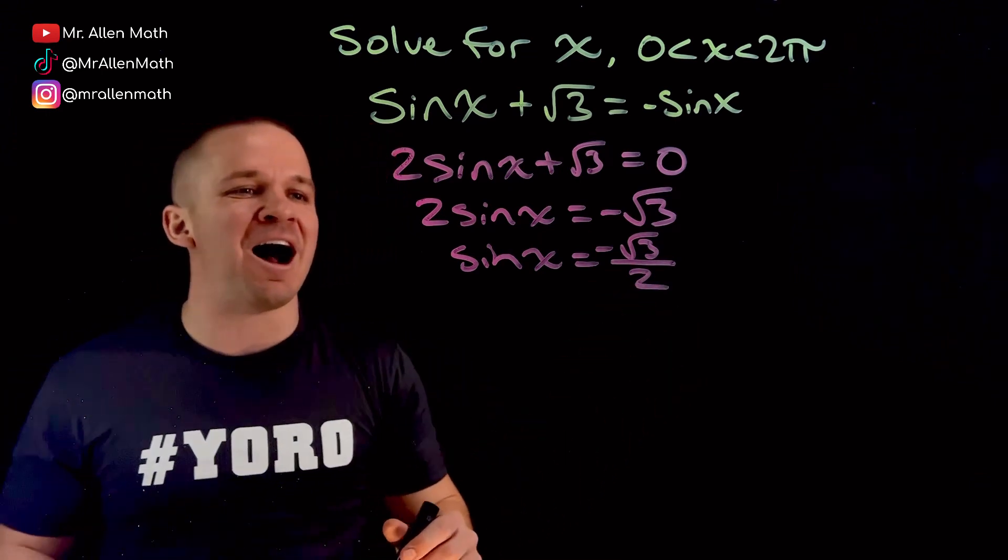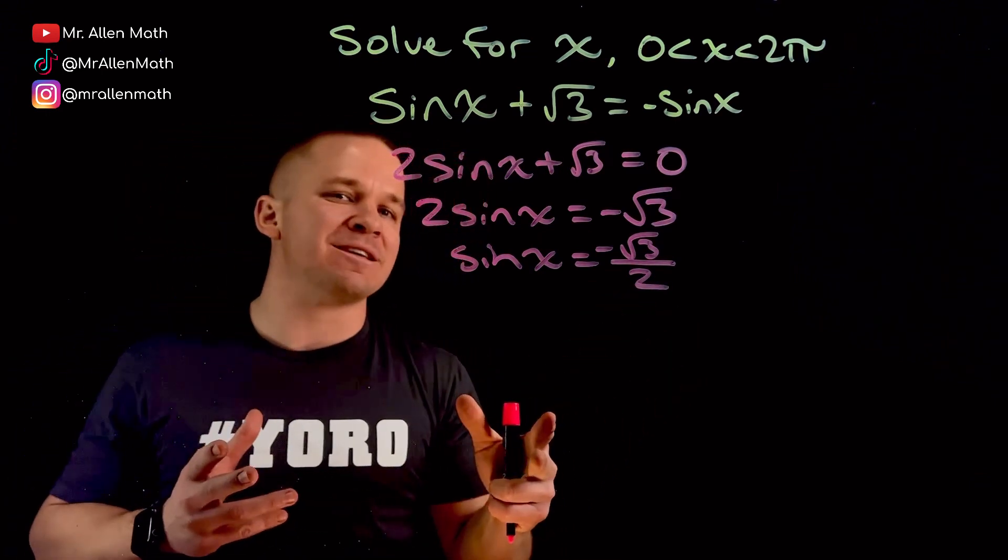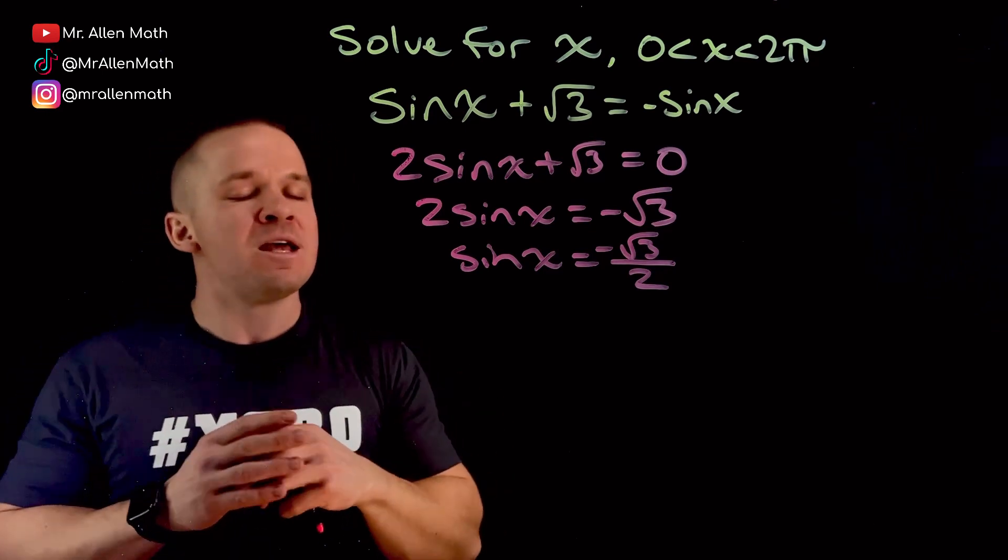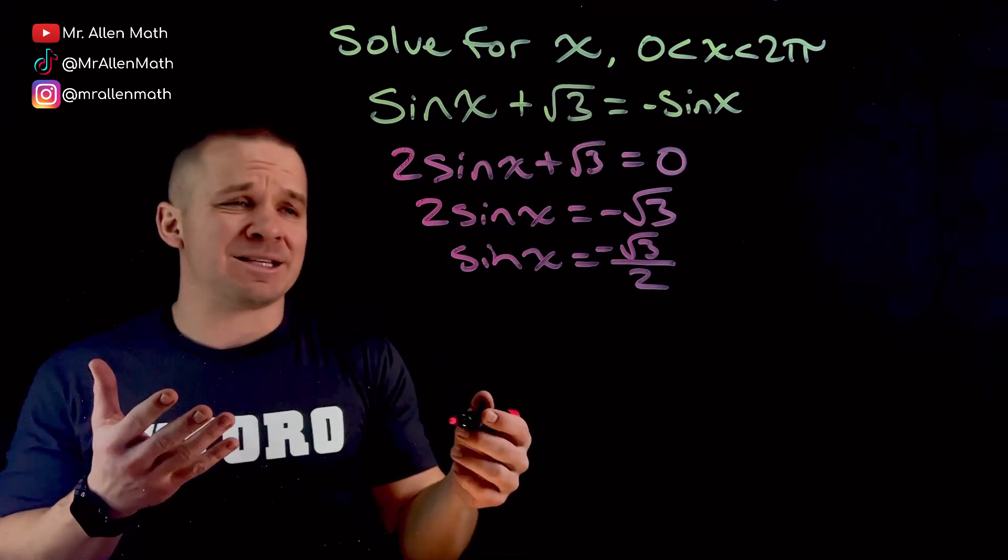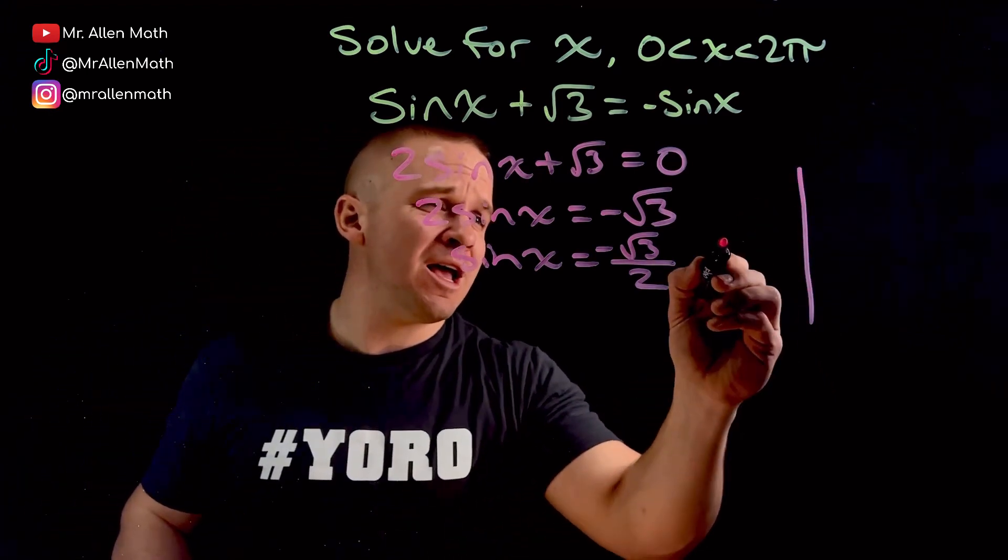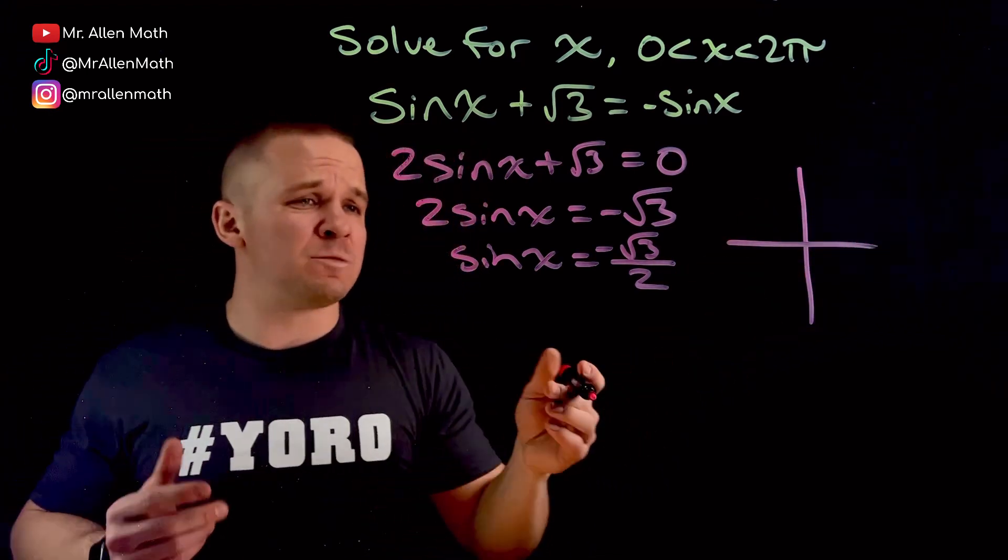All right. We can do this now. I recognize that one. It's a special right triangle. Now, some people like to do this on the unit circle, some like to do it with triangles. I'm going to be honest, I'm a big fan of triangles, maybe because I taught geometry for many years.